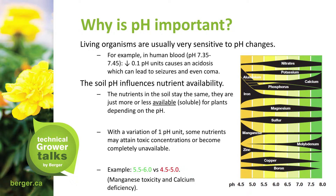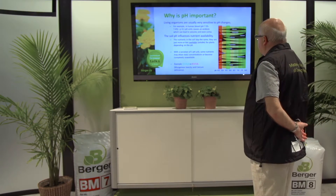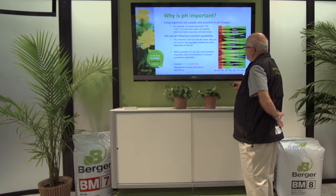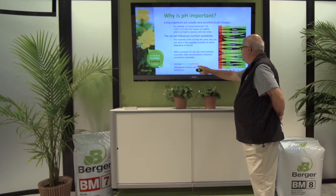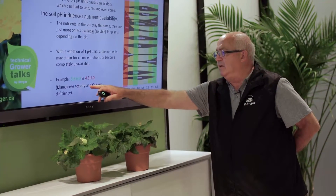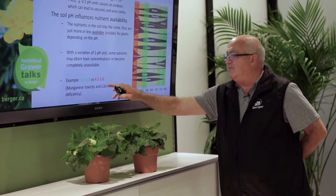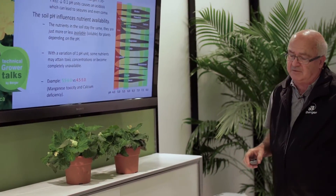Within a variation of one pH unit, some nutrients may attain toxic concentrations or become completely unavailable. For example, at 5.5 to 6 versus 4.5 to 5.0, we might have manganese toxicity, and once we get to 4.5 to 5.0, then we're talking calcium deficiency.